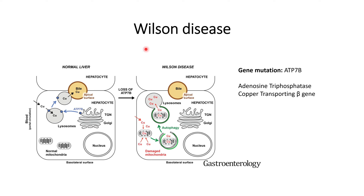In this video we will discuss Wilson disease. Wilson disease is basically related to the liver, specifically the hepatocytes found in liver tissue. The problem that leads to Wilson disease is the mutation of the ATP7B gene, or adenosine triphosphate copper transporting beta gene. This figure compares the functioning of a normal liver with the condition in which the ATP7B gene is not functioning properly.